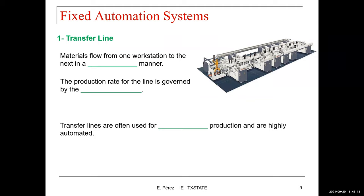Another example of fixed automation systems is the transfer line. Material flows from one workstation to the next in a sequential manner — you have a conveyor in the middle moving the product, and every time it moves forward, something is processed or added to the product. The production rate for this line is governed by the slowest operation, which we typically call a bottleneck. Transfer lines are used for high-volume production and are highly automated.